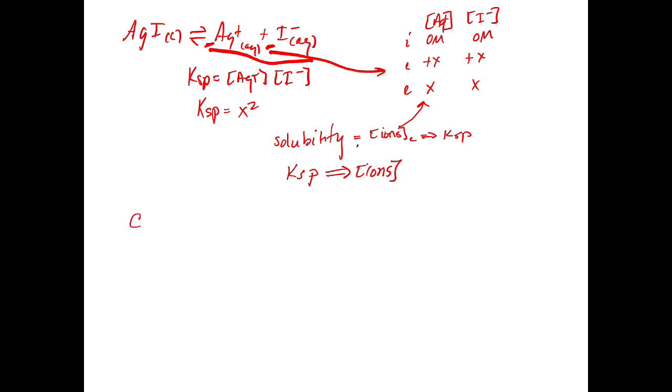So if, for example, we were to have calcium phosphate, and that dissolves, calcium phosphate is three calciums and two phosphates. So when this dissolves, we're going to get three calcium two-plus aqueous plus two PO4 three-minus aqueous in solution.